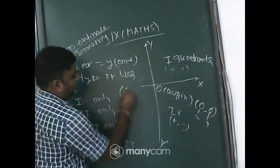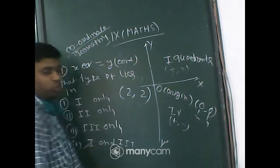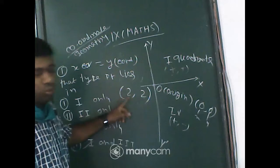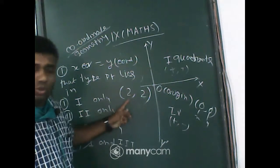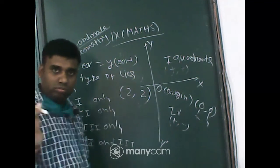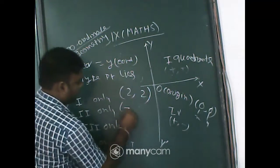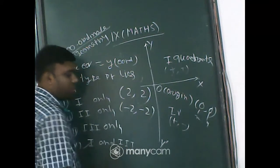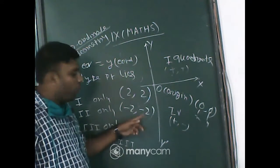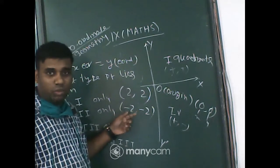For example, (2, 2) — both are equal. x coordinate is 2, y coordinate is 2, it lies in the first quadrant. When x is negative and y is negative, it must lie in the third quadrant.